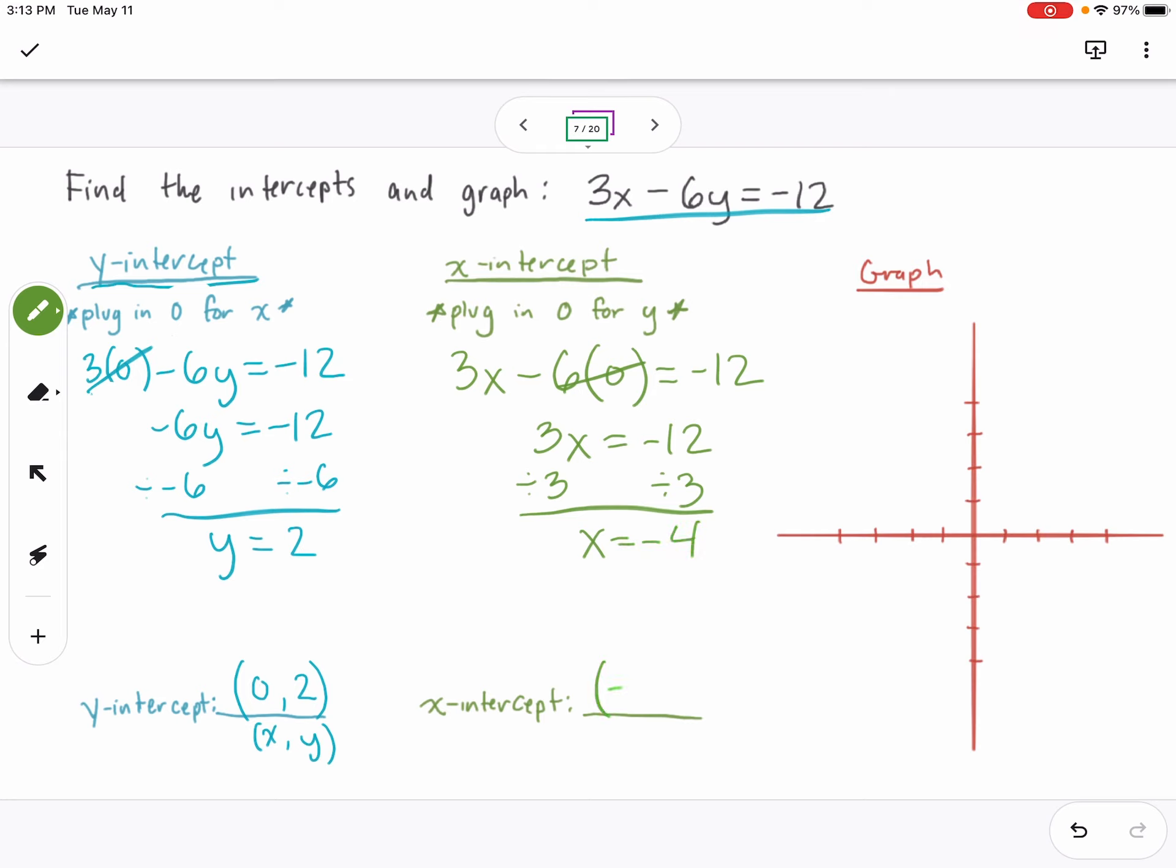So this time, my x value is negative 4, and my y value is 0 because I plugged in 0 for y.